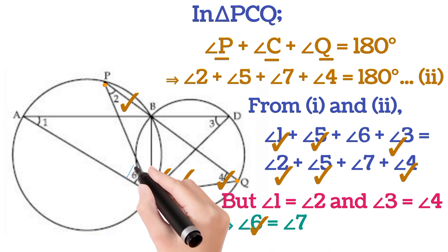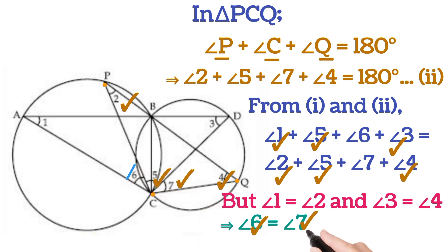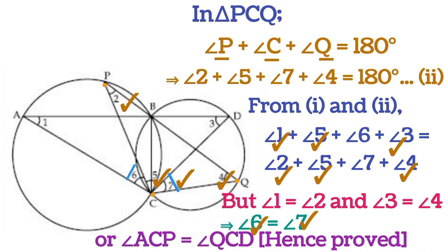6 is this angle and 7 is this angle. This can be written as angle ACP is equal to angle QCD. So here we proved angle ACP is equal to angle QCD. This was asked in the question.